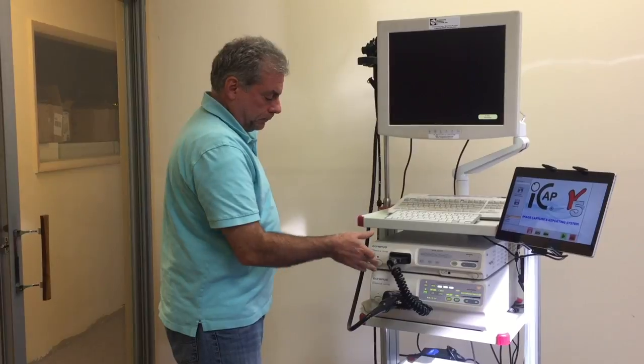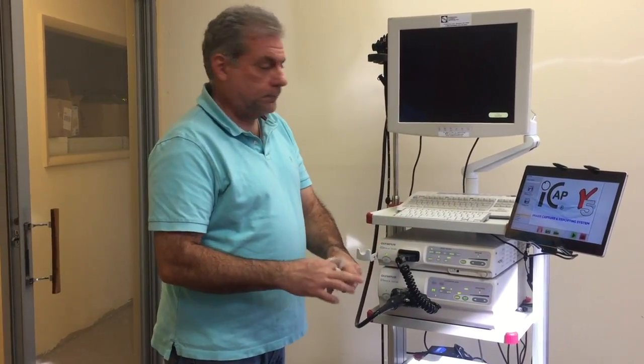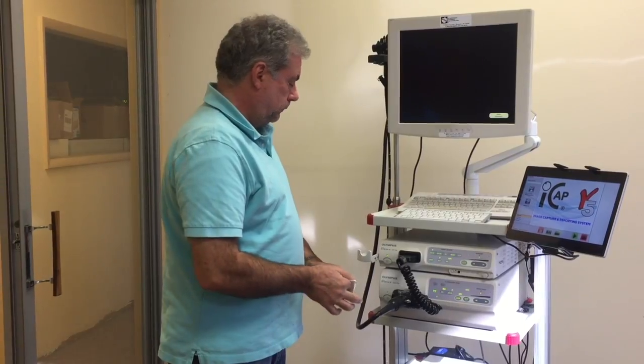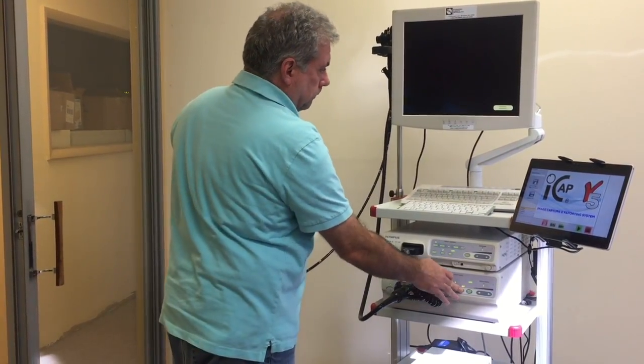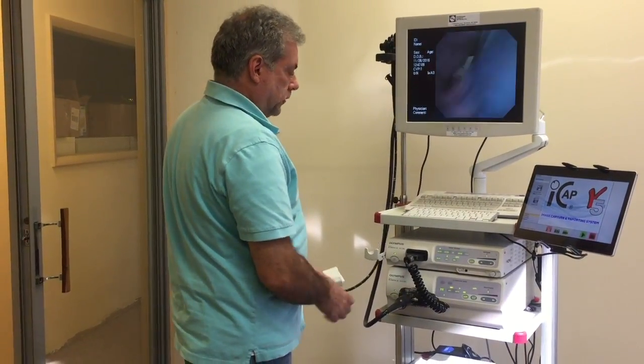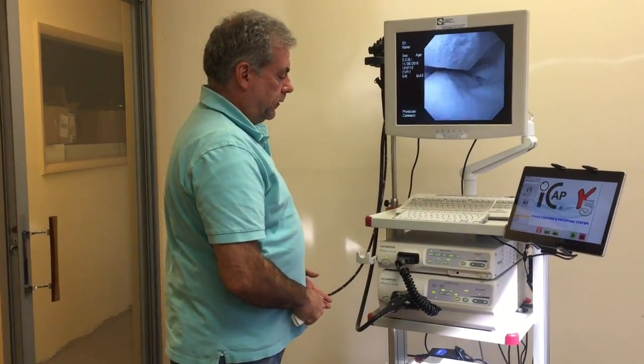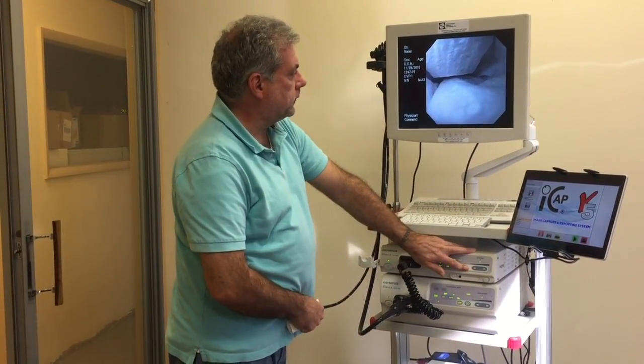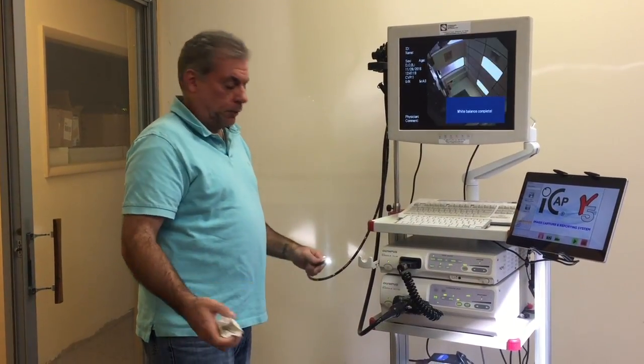Same thing, turn the unit on. Grab a white field. Ignite the lamp. And there we have our endoscope image. Put in the white field and white balance. White balance is complete and now we're ready for a flexible procedure.